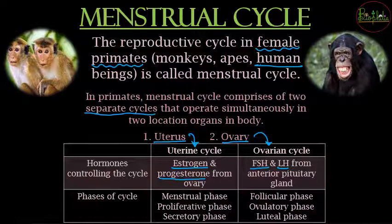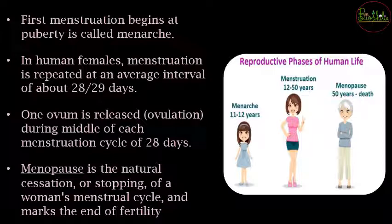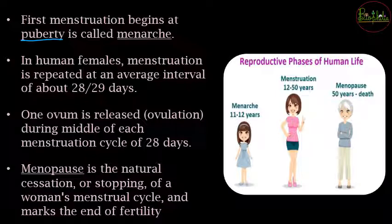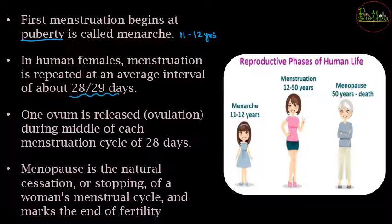Let's understand when menstruation begins. The first menstruation begins at puberty — during the teen years — and that start of menstruation is called menarche. Menarche occurs around 11 to 12 years of age. Once menarche starts, the menstrual cycle repeats at an average interval of 28 to 29 days.